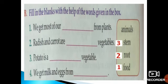Number 4 — we get milk and eggs from blank. We get them from animals. We get eggs from duck and hen, and we get milk from cow and buffalo.